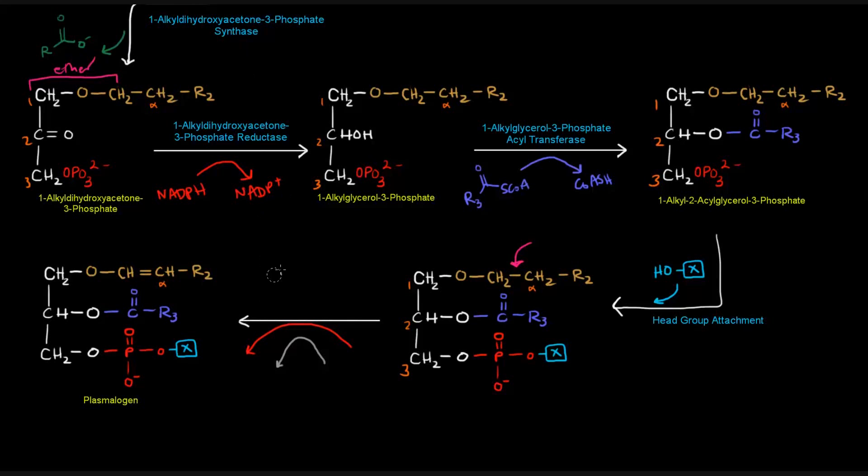In order to give our final product, this plasmalogen here, we have a mixed function oxidase act on this. The mixed function oxidase requires NADH as well as molecular oxygen, which will be converted into water, to give us this final product, our plasmalogen.